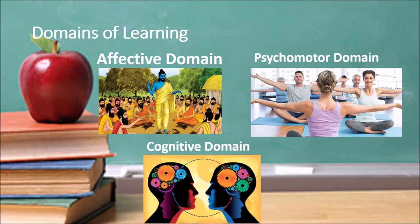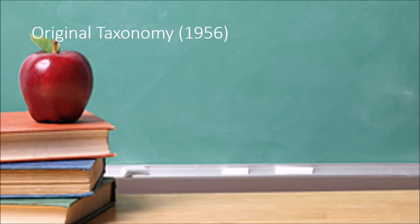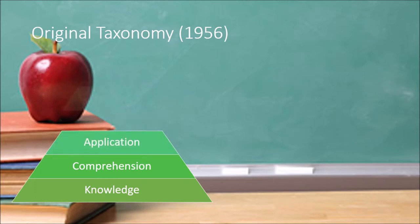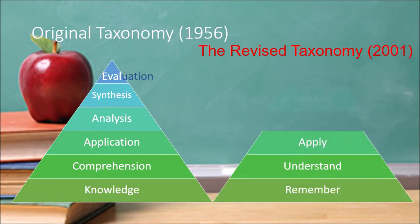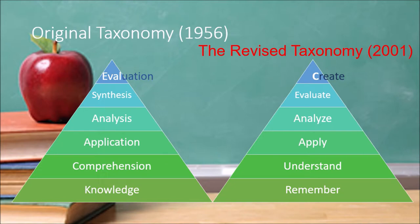In current teaching methods we usually follow the cognitive domain of learning. In the original Bloom's Taxonomy of the cognitive domain, the levels are: knowledge, comprehension, application, analysis, synthesis, and evaluation. Later, in 2001, Bloom's Taxonomy was revised — there are still six levels in the new taxonomy, which are quite similar.